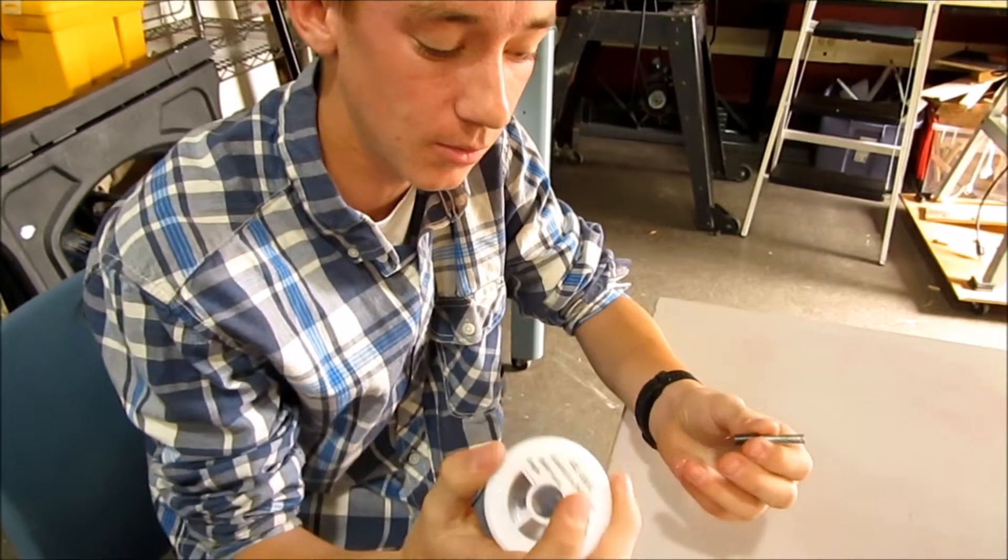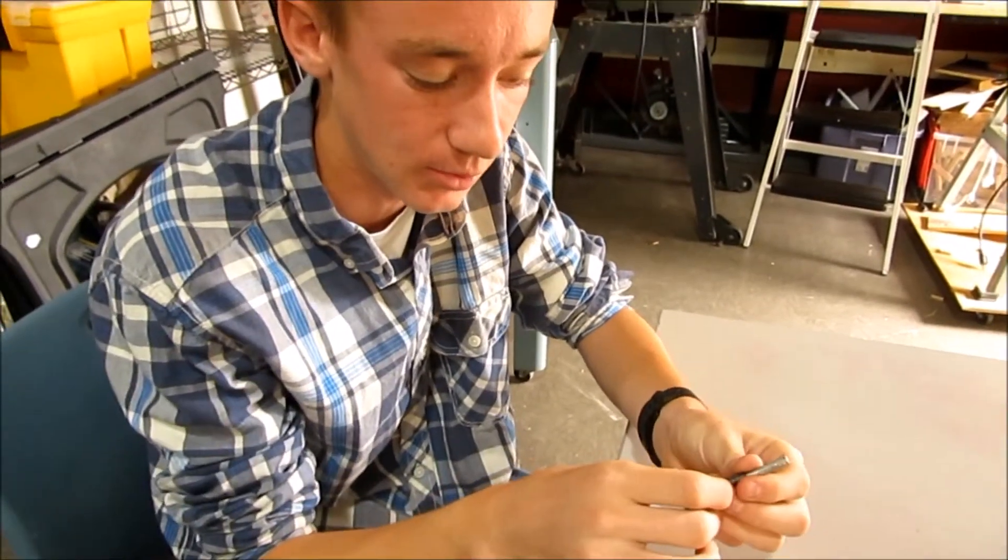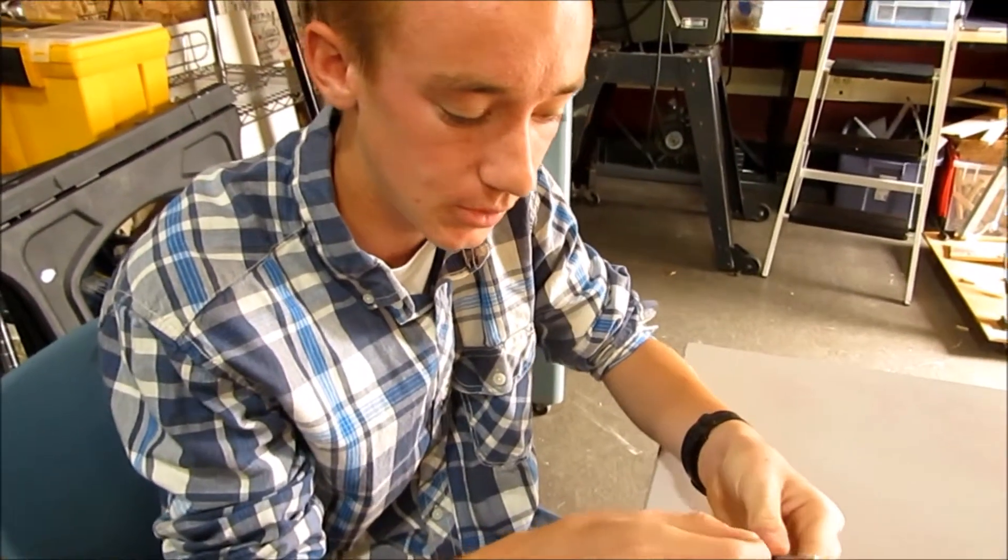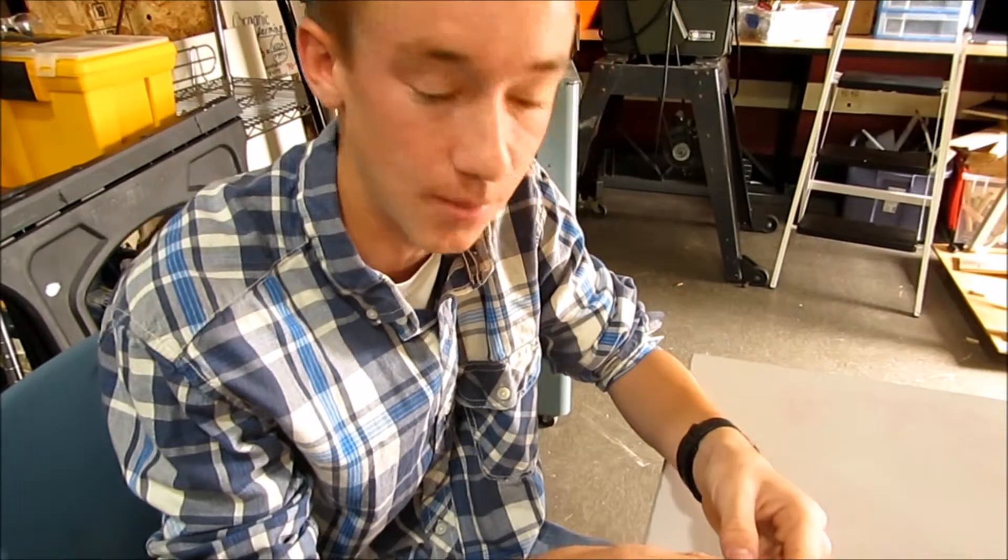And so we have here 44 gauge wire, which is really, really thin. It's thinner than the string in here. So it's very hard to get it to wrap around without breaking it.